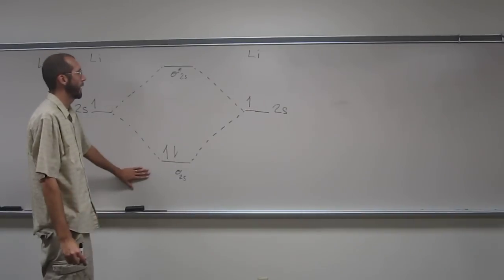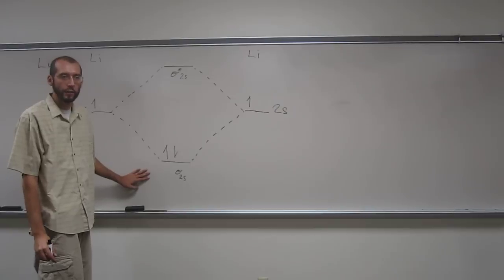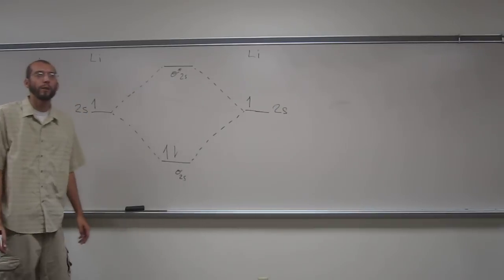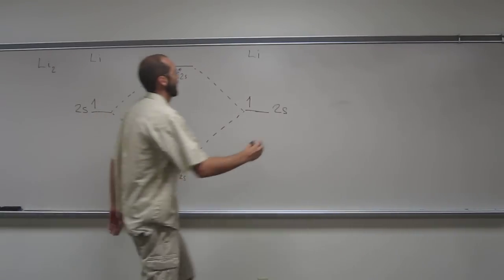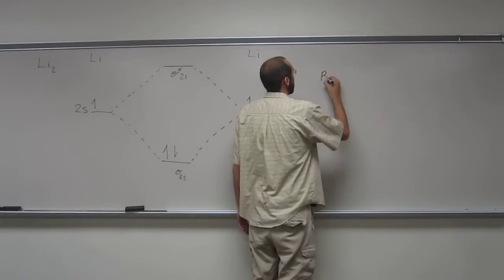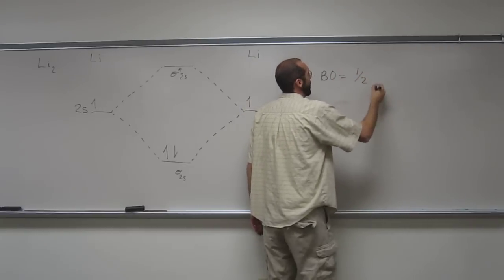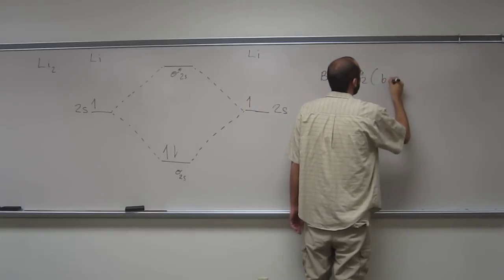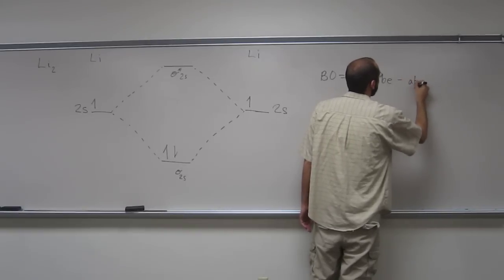So now I guess the next question is, would this molecule exist? And so in order to do that, you've got to figure out what the bond order is. So there's another formula for you. The bond order is one half the bonding electrons minus the anti-bonding electrons.